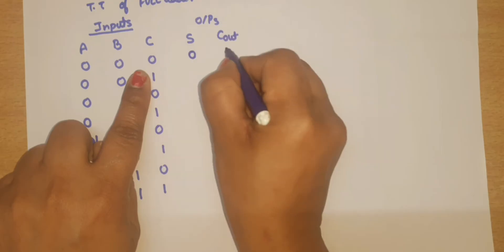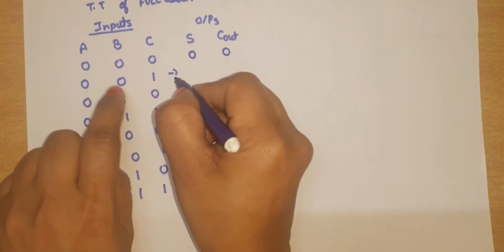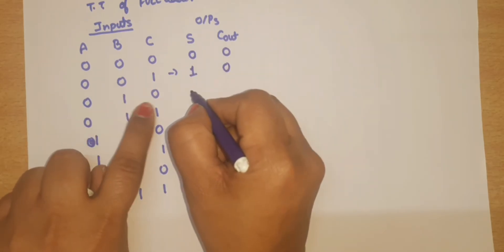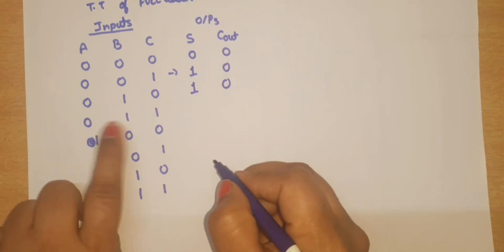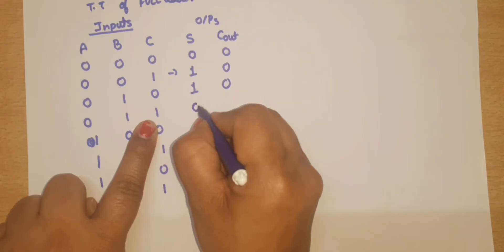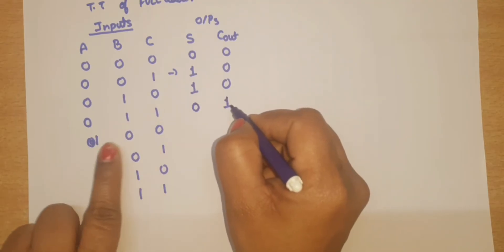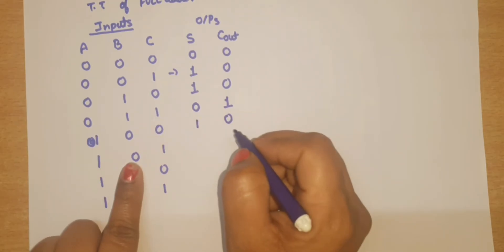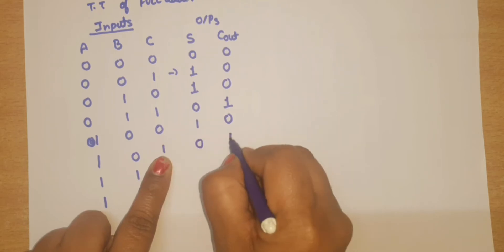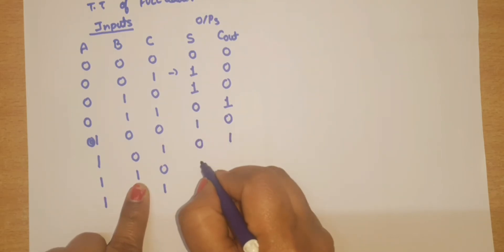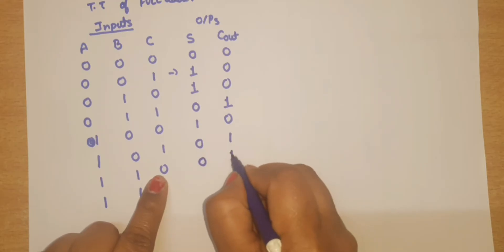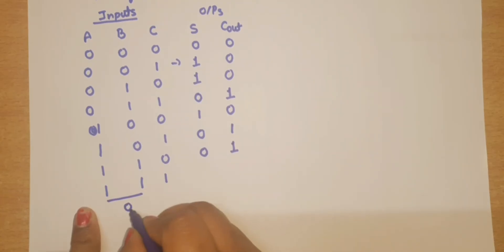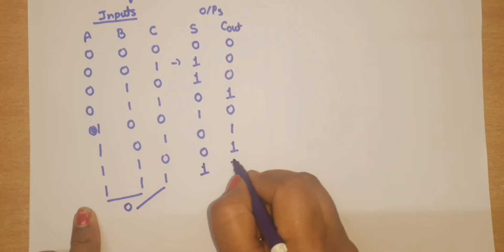Filling the truth table: sum of 0+0+0 is 0, carry is 0. Sum of 0+0+1 is 1, carry is 0. Sum of 0+1+0 is 1, carry is 0. Sum of 0+1+1 is 0, carry is 1 (carry is high). Sum of 1+0+0 is 1, carry is 0. Sum of 1+0+1 is 0, carry is 1. Sum of 1+1+0 is 0, carry is 1. Sum of 1+1+1 is 1, carry is 1.